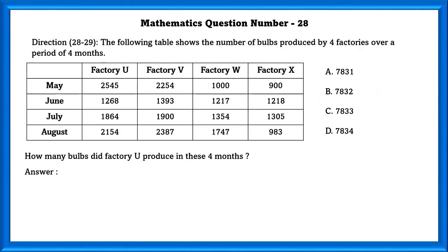Mathematics question number 28. The following table shows the number of bulbs produced by 4 factories over a period of 4 months. How many bulbs did factory U produce in these 4 months? In order to find how many bulbs factory U produced, we have to add how many bulbs factory U produced from May to August. If we do that we will get 7,831.